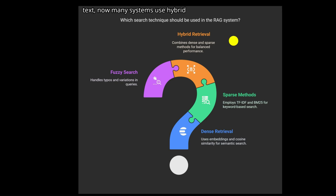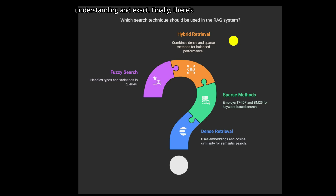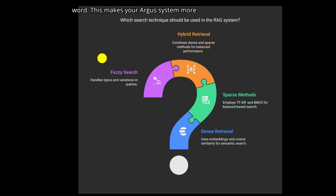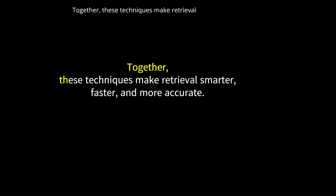Many systems use hybrid retrieval — a smart mix of dense and sparse. This way you get both deep understanding and exact keyword matching. Finally, there's fuzzy search. It helps when the user makes a typo or uses a slightly wrong word, making your RAG system more forgiving and user-friendly. Together, these techniques make retrieval smarter, faster, and more accurate.